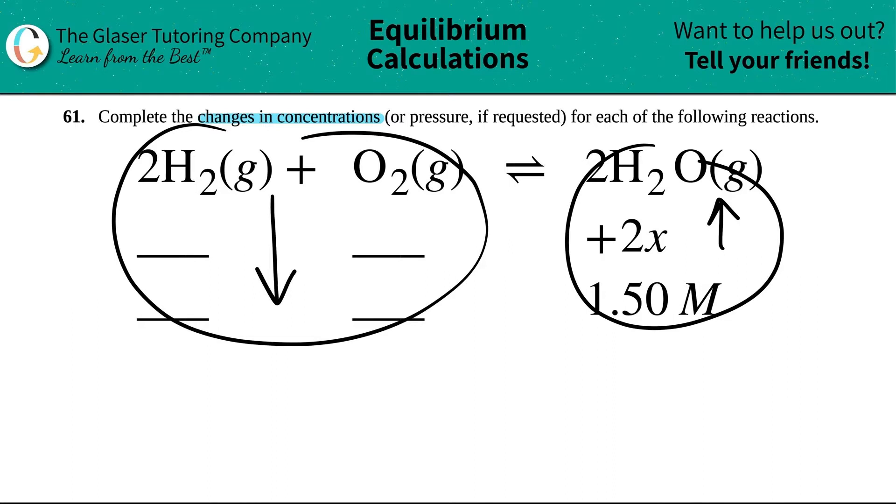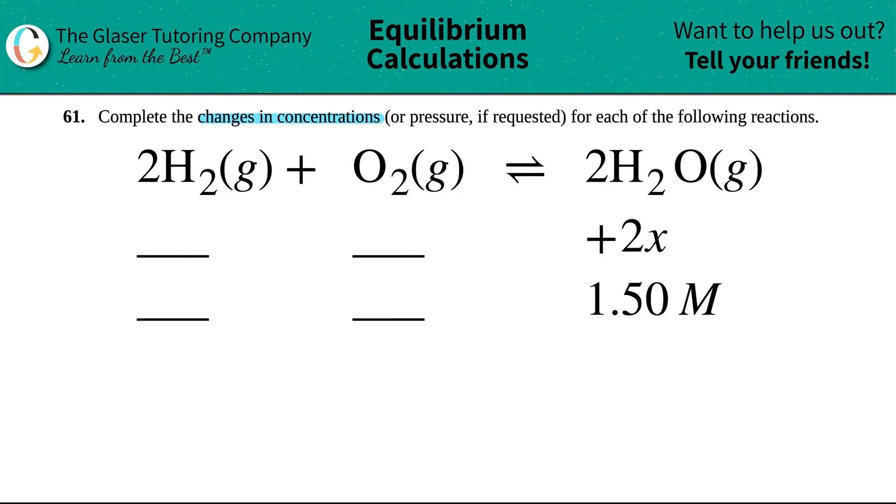You can't have the whole system increasing or the whole system decreasing. So one's going up, the other one's coming down. How do we represent something is decreasing? We represent it as negative values. So the H2 would be a negative and the O2 would also be a negative. But now what is it going to be decreasing by? That goes by the coefficients.